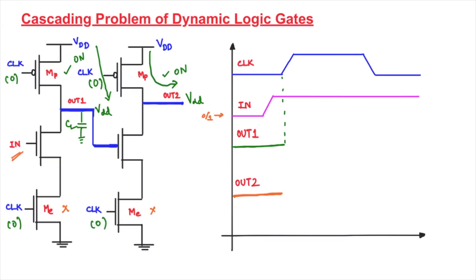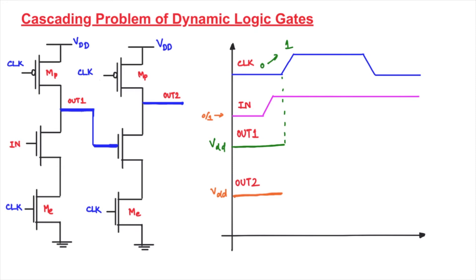Now let us consider the clock transition from 0 to 1. When clock goes to 1, both gates enter the evaluation phase. The pre-charge phase ends and evaluation begins — the circuit now checks the input. The input has also transitioned to 1 at this point. If the input were 0, the output would remain at the pre-charged value VDD. Since the input is 1, we need to evaluate what the output will be.